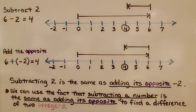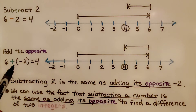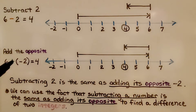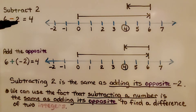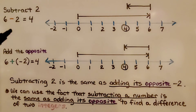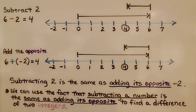Here we're subtracting 2, and here we're going to add the opposite. We're subtracting a positive 2, and here we're adding a negative 2 — see how we're adding the opposite? We had a positive 2, and now we're going to add a negative 2 instead of subtracting. Subtracting 2 is the same as adding its opposite, negative 2. We can use the fact that subtracting a number is the same as adding its opposite to find the difference of two integers.